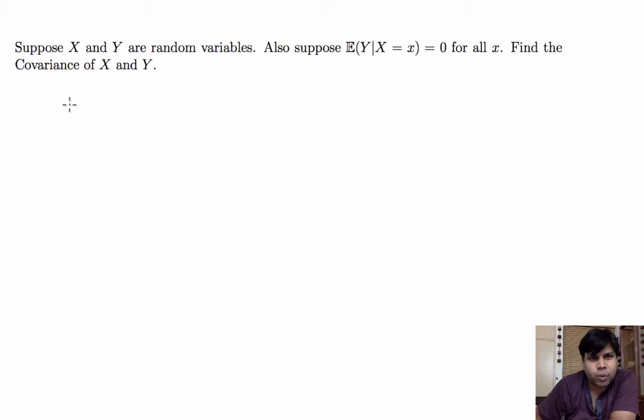So, covariance of X and Y equals expectation of XY minus expectation of X times expectation of Y. In order to find the covariance, we want to find these three terms: expectation of XY, expectation of X, and expectation of Y.